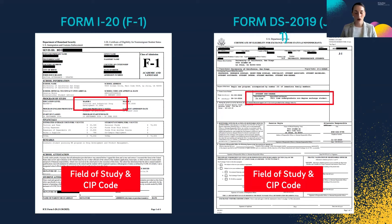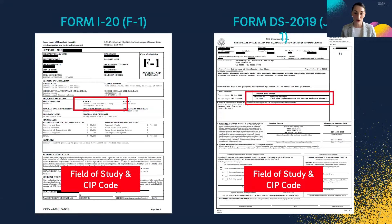The U.S. government categorizes all fields of study and assigns a general name and number — a SIP code — to each field. Your UC San Diego major has a U.S. government field of study and SIP code applied to it, and that is what shows on your Form I-20 or DS-2019. Note that the name of your field of study on your form might not exactly match the name of your major at UC San Diego — that is very common and that is OK. When the DS-160 asks for your field of study and SIP code, you should put what you find on your Form I-20 or DS-2019.